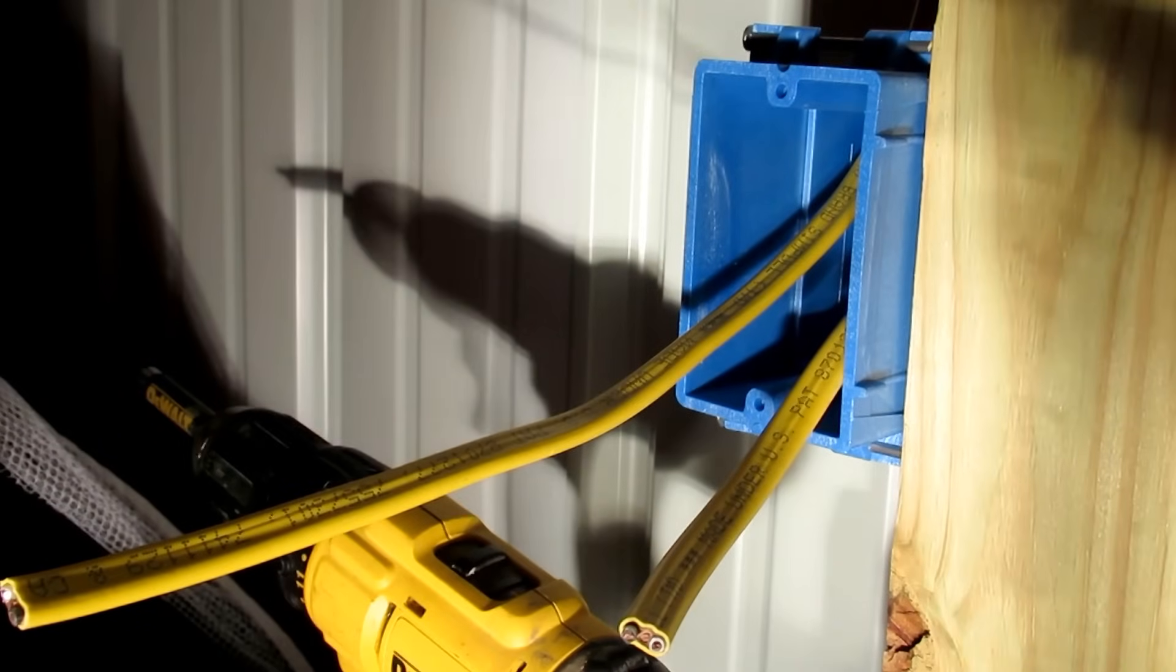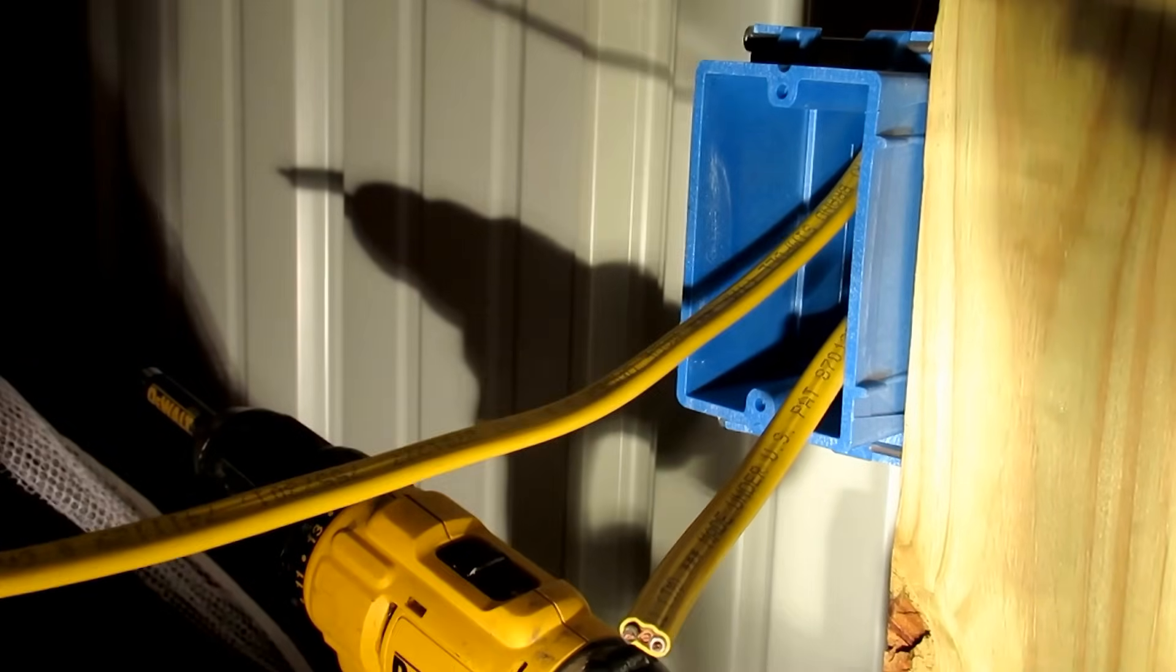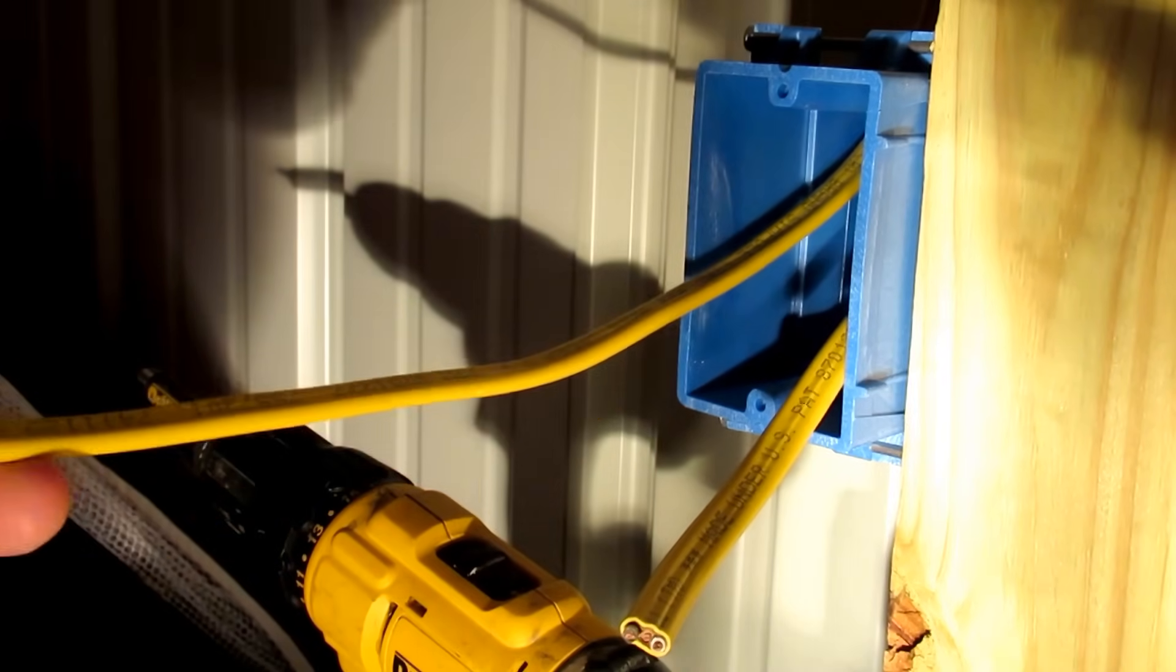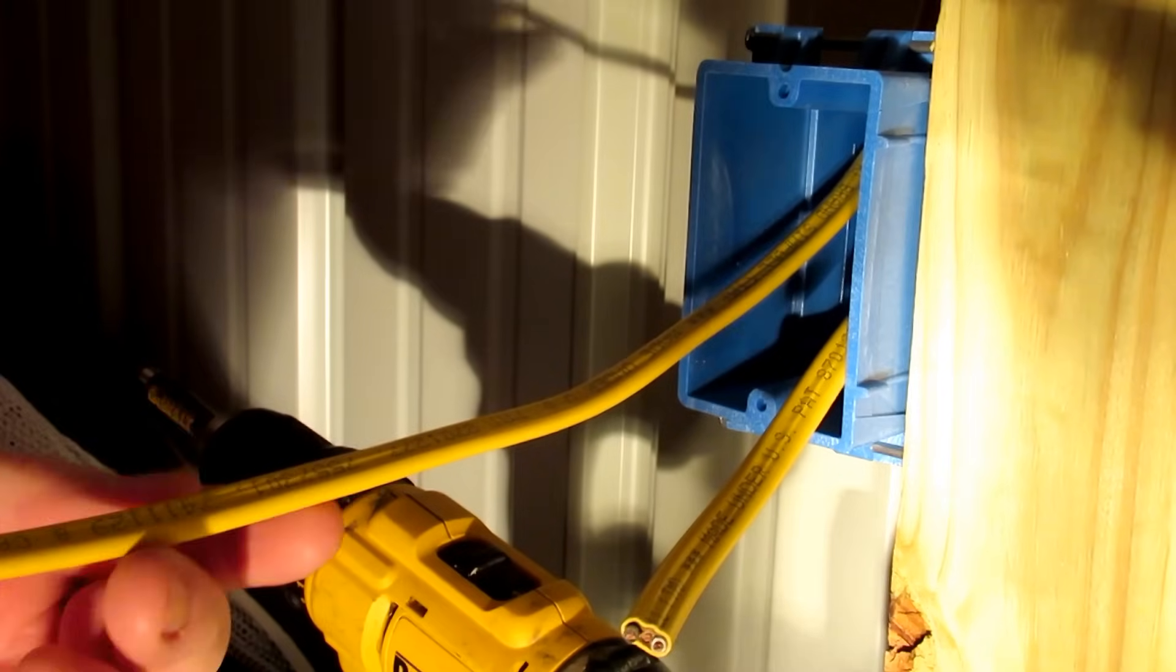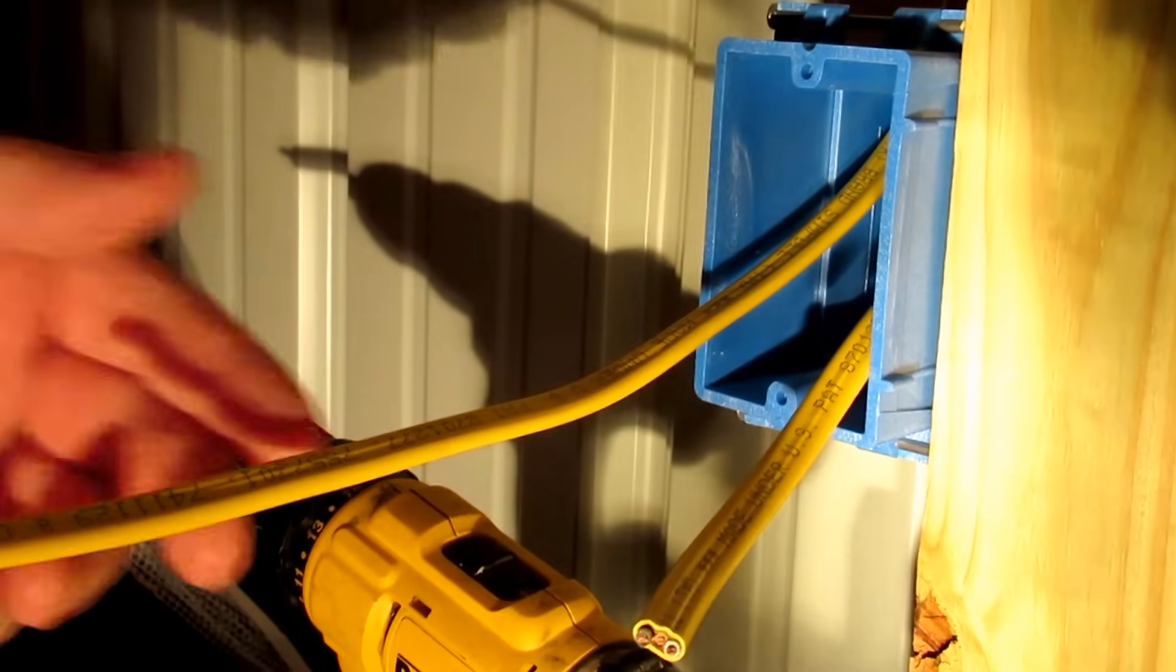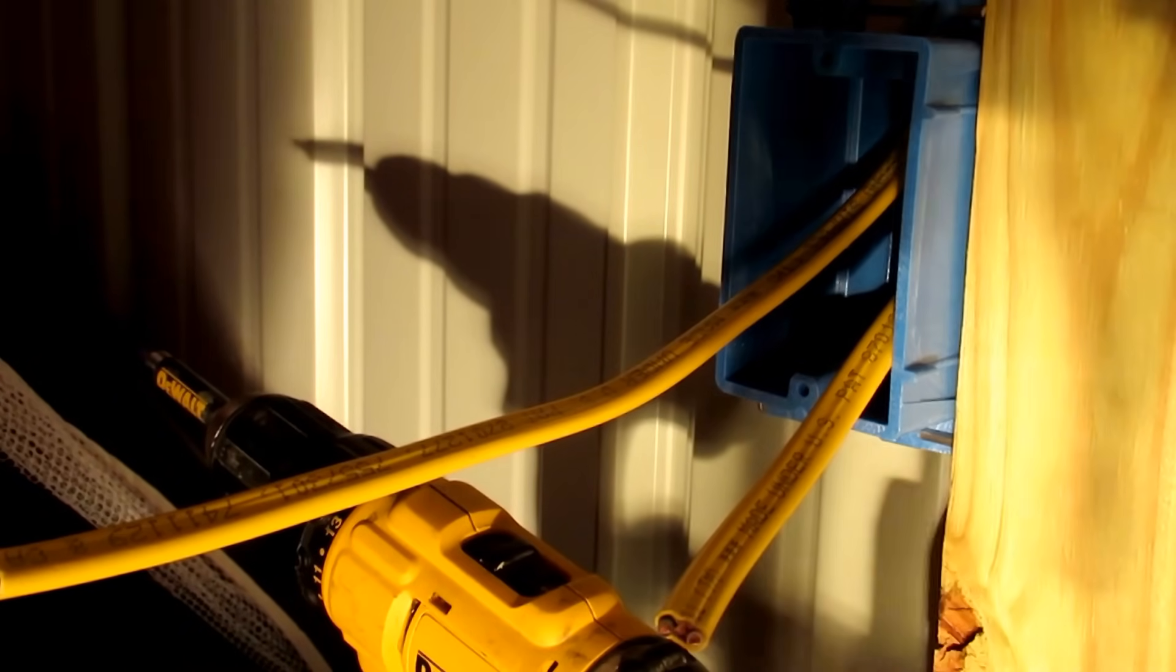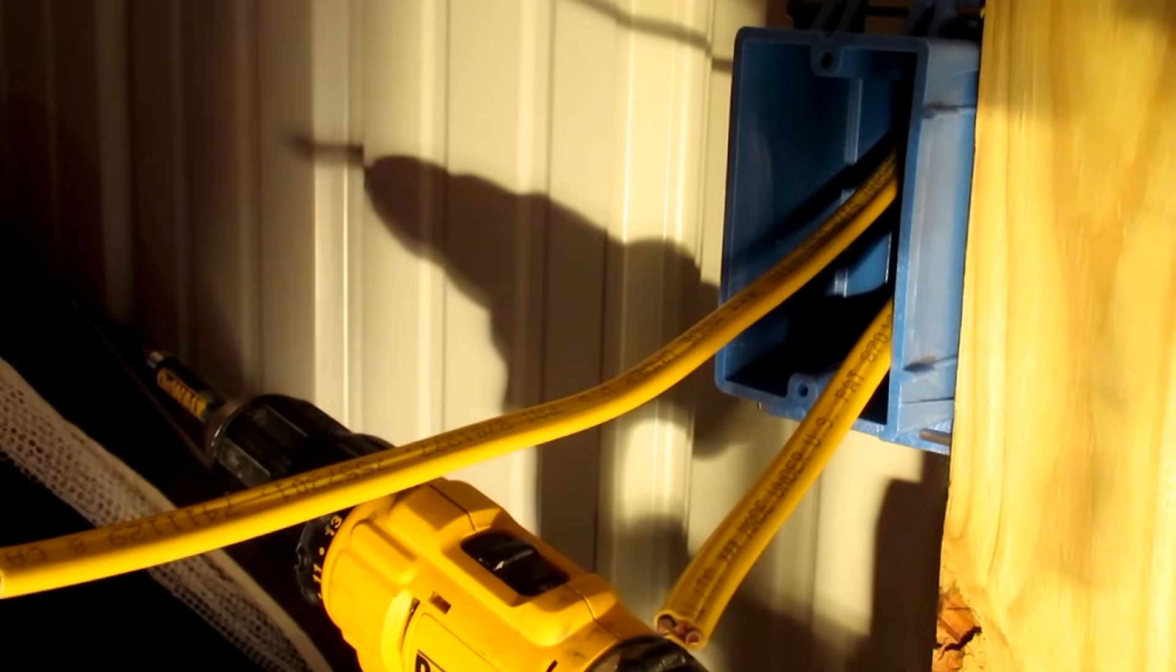Hey guys, in this video I thought I would show you the basic steps in wiring a light switch. The first thing you want to make sure you do is turn off the power anytime you're working with electricity. This particular switch is a new installation. I know the power is off. Sorry about the lighting.